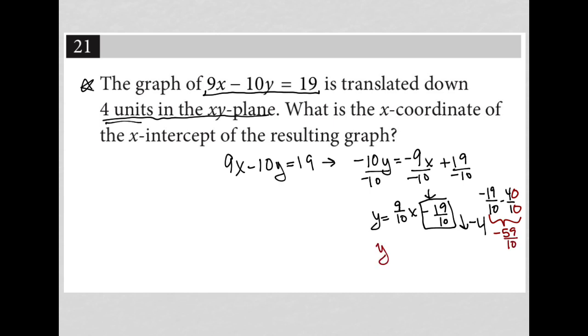So my new equation would say y equals 9 tenths x minus 59 over 10. The next part of this question says, what is the x-coordinate of the x-intercept of the resulting graph?